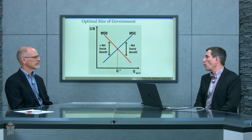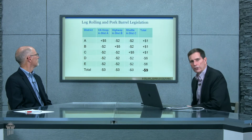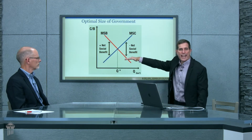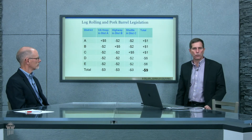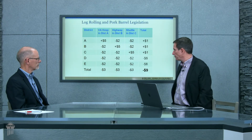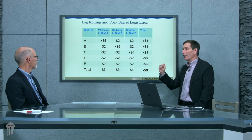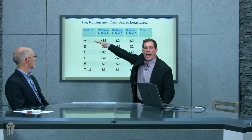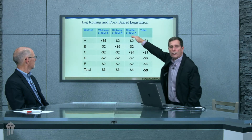But we can start to see, when special interests are present that may not operate in the public interest, how this can go awry. Let me jump forward with an example from public choice economics — something called log rolling or pork barrel. Let's say we have five congressional districts and three projects being bid on.